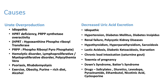Sometimes it can be due to decreased uric acid excretion — causes include idiopathic, hypertension, diabetes, and renal failure. One of the common causes of high uric acid is renal failure. High uric acid can produce renal failure, and renal failure can lead to high uric acid.